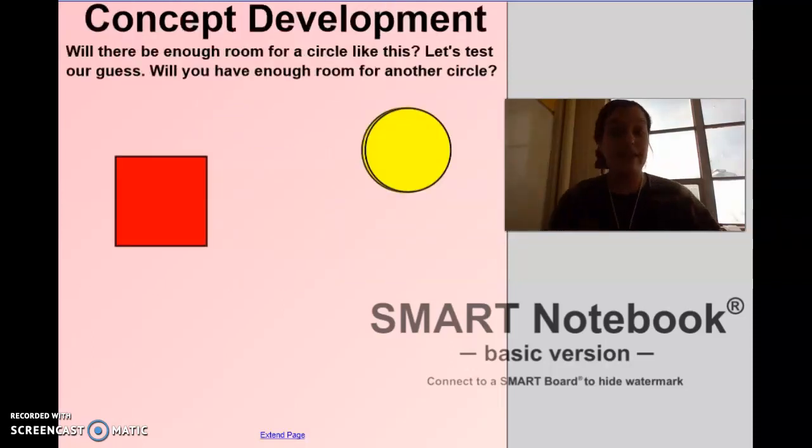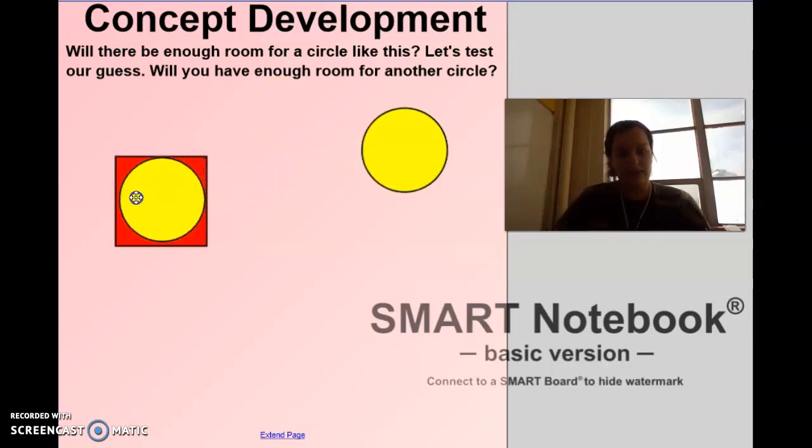Okay. Now we have two shapes. Can anyone name them? We have a square, which has four sides, and a circle, which has no sides. Does a circle fit in the square? Show me a yes or a no. Let's try it out. Does the circle fit in the square? Yes. One circle will fit in the square.